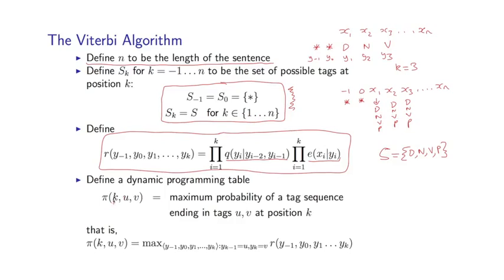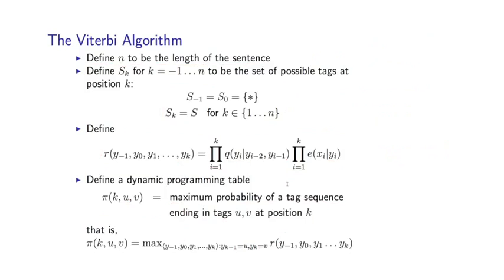Okay, so pi k u v. k can take any value in 1 to up to n. u takes any value in sk minus 1. And v takes any value in sk. So this is going to be the maximum probability of any tag sequence ending in tags u, v at position k. More precisely, pi k u v is, here I have a max of all sequences with k tags, y1 through k, preceded by y minus 1, y0, these are both star, always assumed to be star, such that yk minus 1 equals u, yk equals v of this r function I've shown you here. So that's the formal definition. Let me give you a particular example on the next slide.